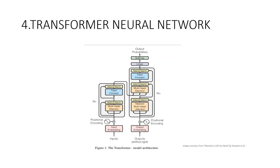The next model used for natural language generation is Transformers, a relatively new model first introduced in 2017. A Google paper titled 'Attention Is All You Need' proposed a new method called the self-attention mechanism. The transformer consists of a stack of encoders for processing inputs of any length and another set of decoders to output the generated sentences. In contrast to LSTM, transformers perform only a small, constant number of steps while applying a self-attention mechanism that directly models the relationship between all words in a sentence.